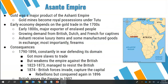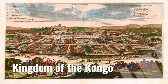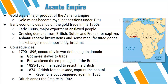The consequences for the Asante: from 1790 to 1896 they were constantly at war defending their domain. Getting more slaves to trade weakened their empire against the British because the slave trade had depleted their population. From 1823 to 1873 they managed to resist the British, but in 1874, British forces invaded and captured the capital. There were rebellions, but in 1902 the British essentially took over — a direct consequence of the slave trade.